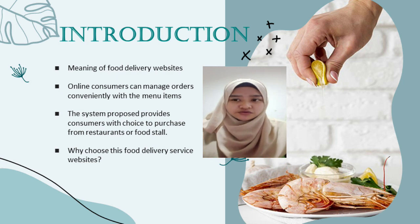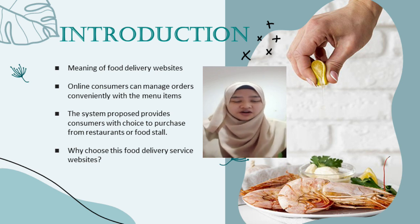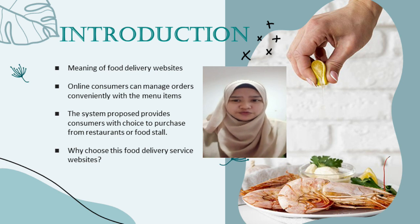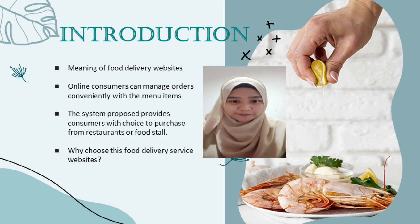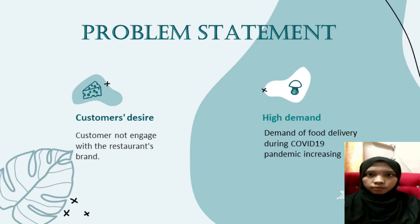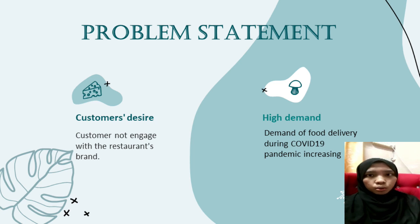Next is an explanation of why we chose food delivery services — because it has been one way to prevent COVID-19. During this pandemic, the virus spreads fast mostly in crowded places where people love to eat. In order to prevent the virus from spreading, we can use this opportunity to buy food using delivery service websites, helping our country decrease the number of COVID-19 cases in Malaysia. A further problem identified is that customers don't engage with the restaurant's brand, and third-party apps take customer data.